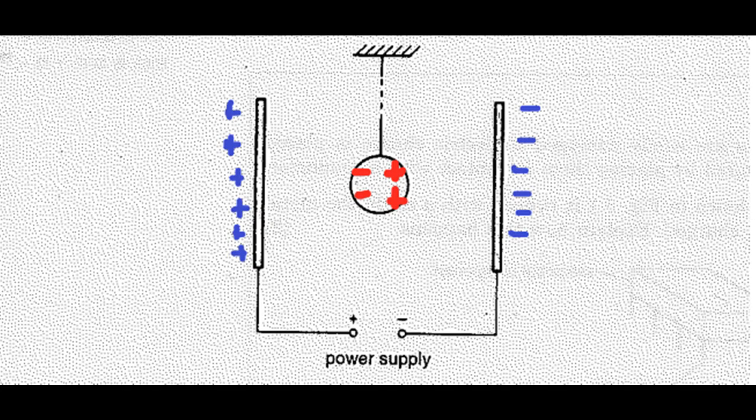The ball is similar to the candle in the previous example. So when drawing, two sets of equal but opposite induced charges on the sphere should be shown: the alignment of negative charges on the left side and the positive charges on the right side.